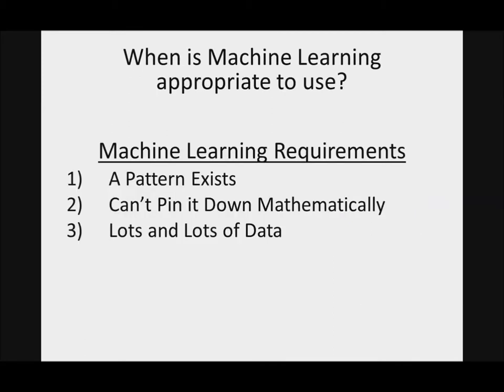So when is machine learning appropriate to use? There are three things that you need in order to even consider using machine learning. One, a pattern exists. Two, a pattern exists but you can't pin it down mathematically. And three, lots and lots of data. So if you have those three things, then machine learning is actually feasible.